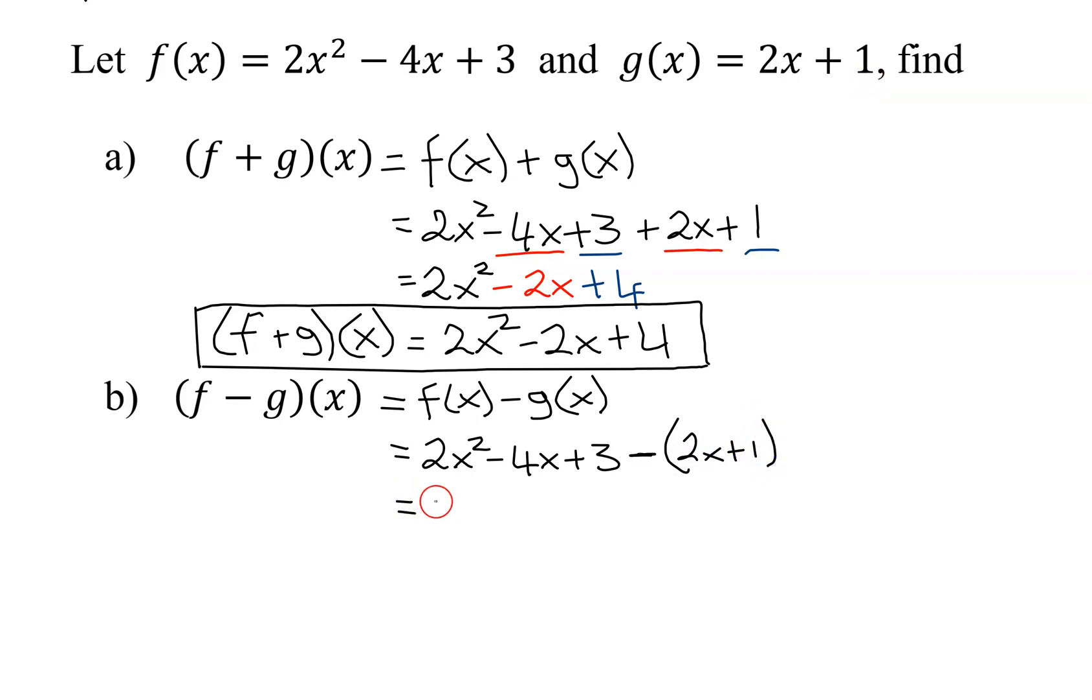So I'm going to get 2x squared minus 4x plus 3. Now I'm going to have to distribute this negative into my parentheses. So negative 1 times 2x is negative 2x. Negative 1 times positive 1 is negative 1. Double check, distributing in the negative should change both of those signs. Did both of those change down here? Yes.